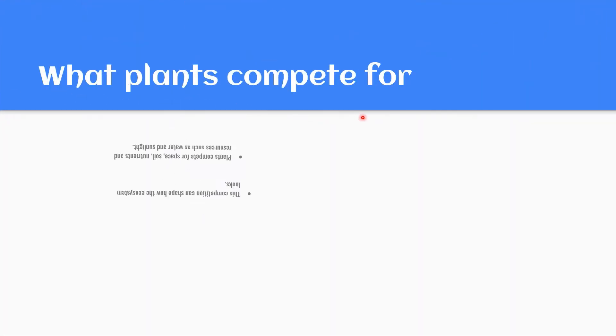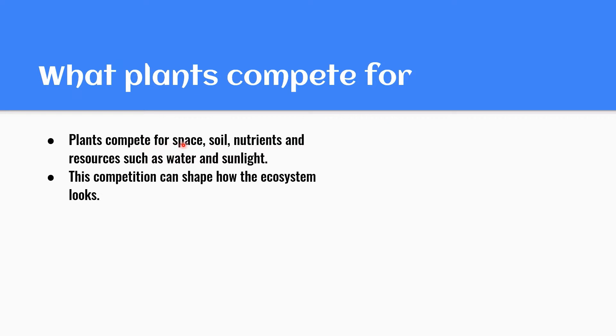What plants compete for? Plants compete for space, soil, nutrients, and resources such as water and sunlight. This competition can shape how the ecosystem looks.